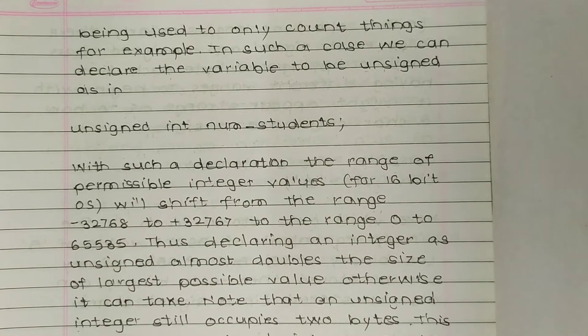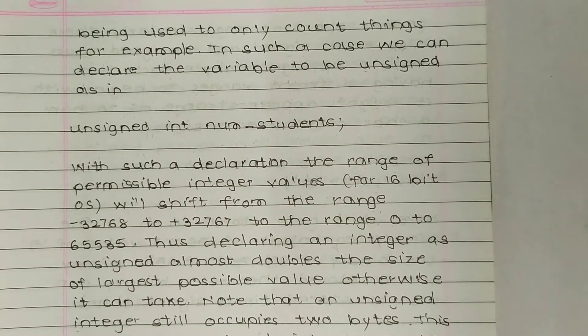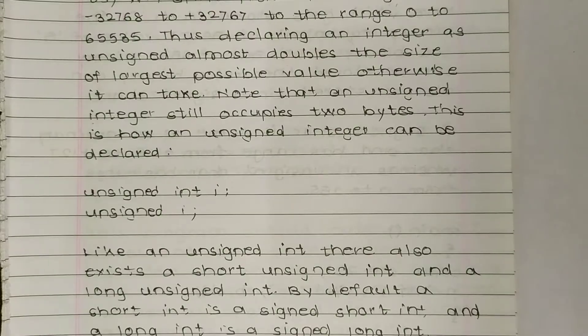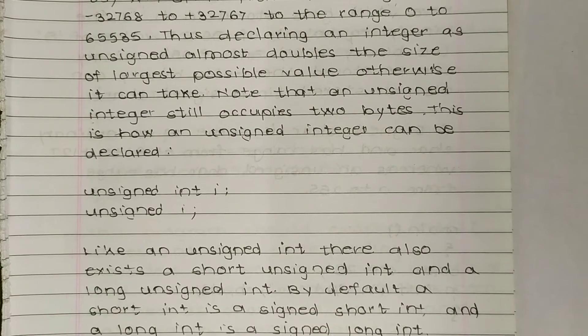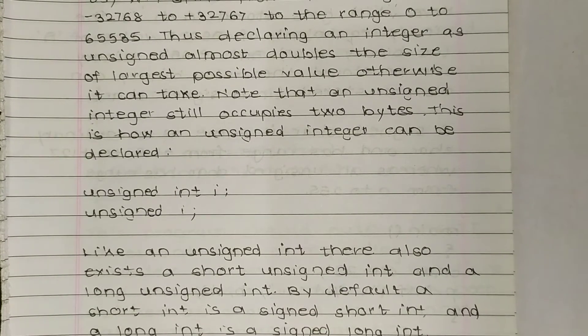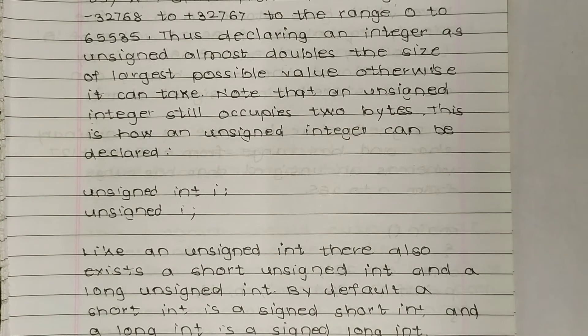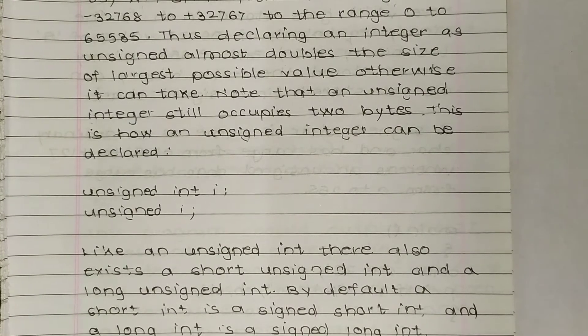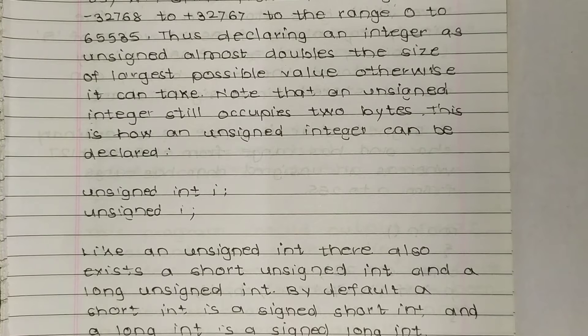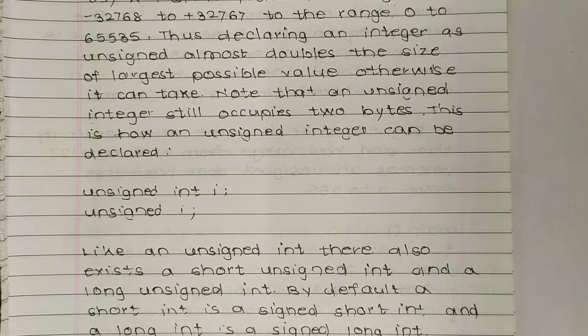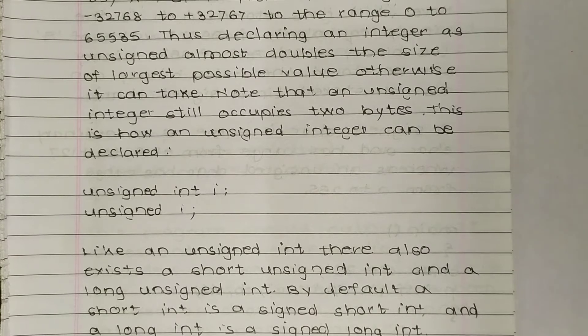Thus declaring an integer as unsigned almost doubles the size of the largest possible value otherwise it can take. Declaring as an integer doubles the actual size of possible value.